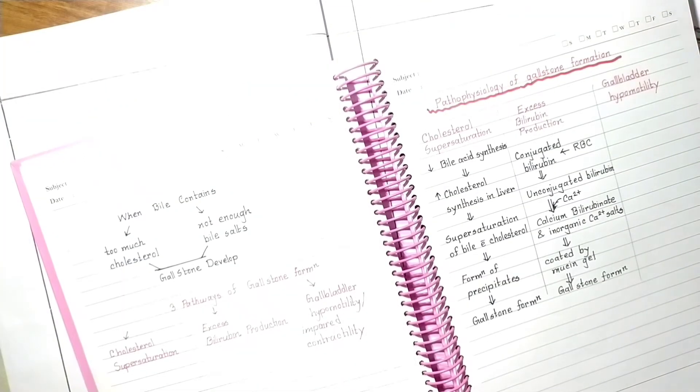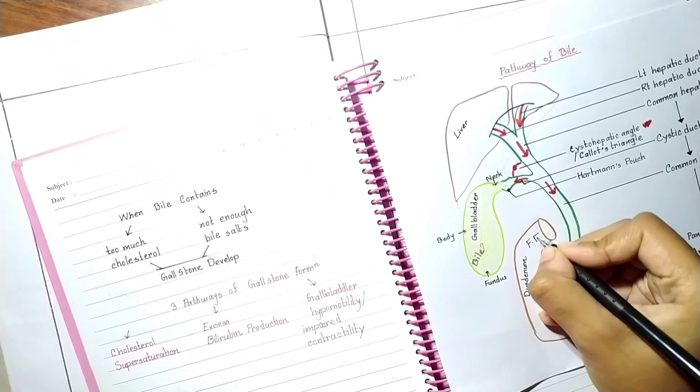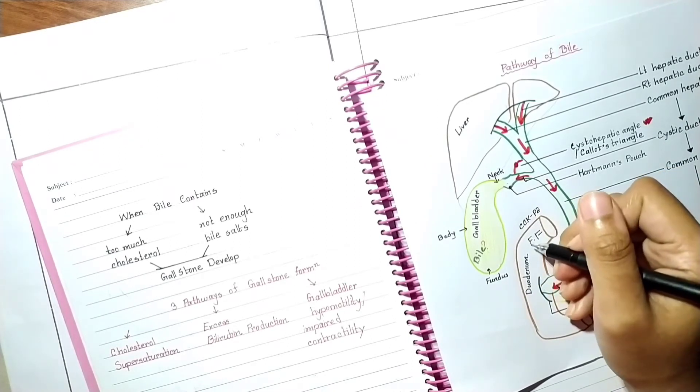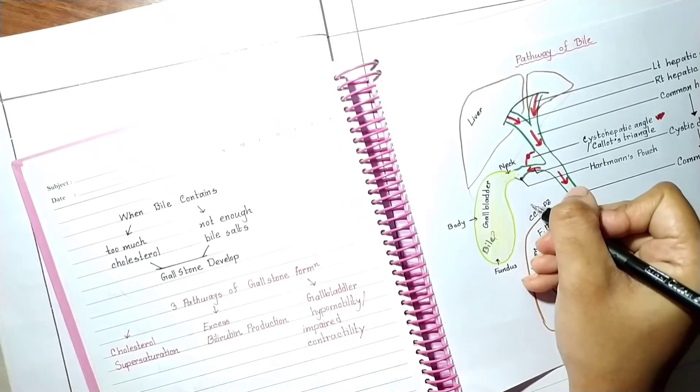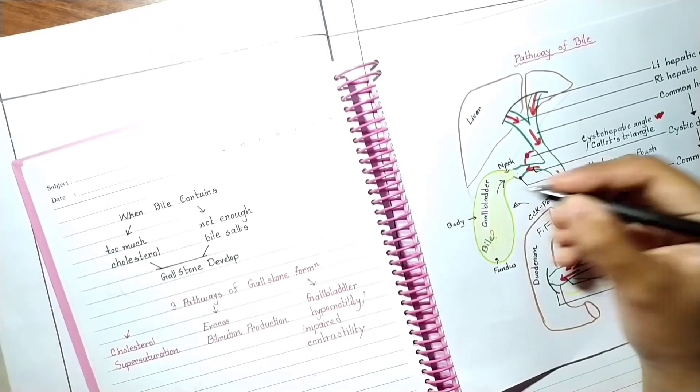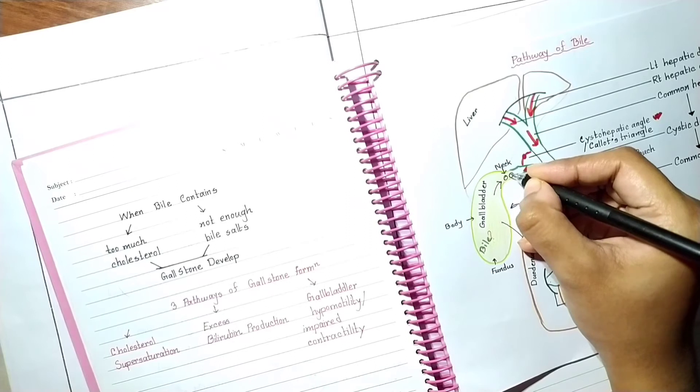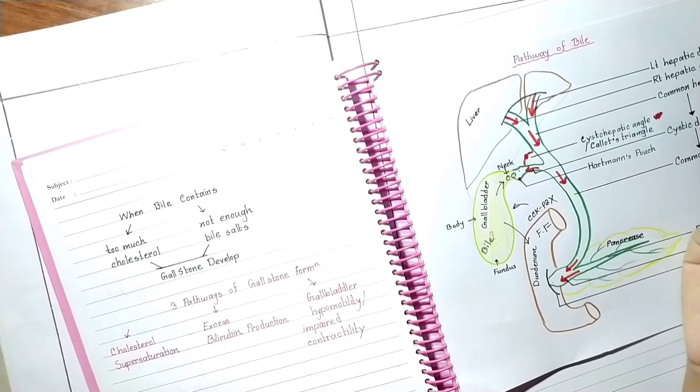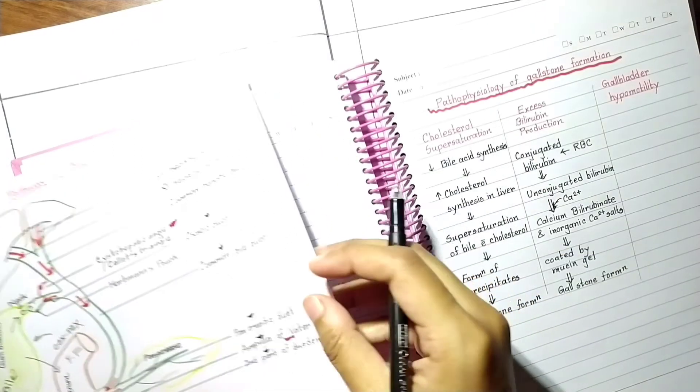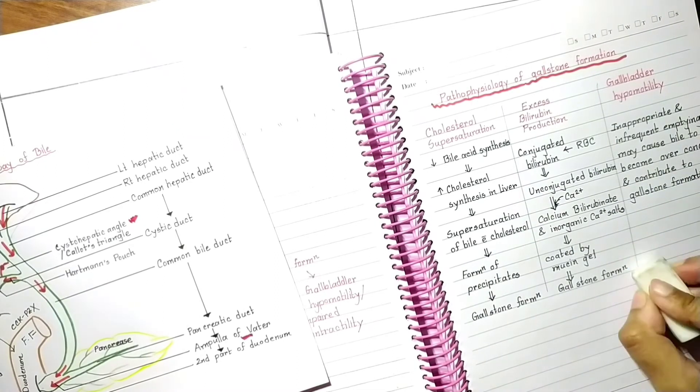In case of gallbladder hypomotility, generally what happens is presence of fatty food in duodenum stimulates the release of cholecystokinin pancreozymin from duodenum and jejunum. Cholecystokinin pancreozymin causes contraction of gallbladder so that gallbladder empties its stored concentrated bile into the duodenum. In case of any kind of obstruction due to decreased cholecystokinin pancreozymin enzyme, this leads to gallbladder hypomotility or impaired contractility. Inappropriate and infrequent emptying may cause bile to become overconcentrated and contribute to cholesterol formation.